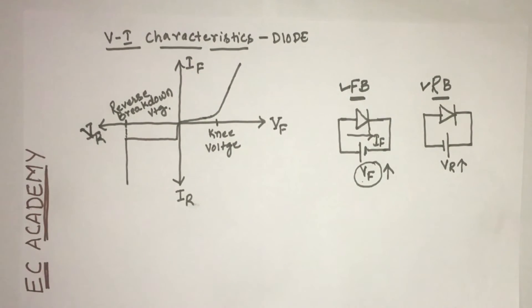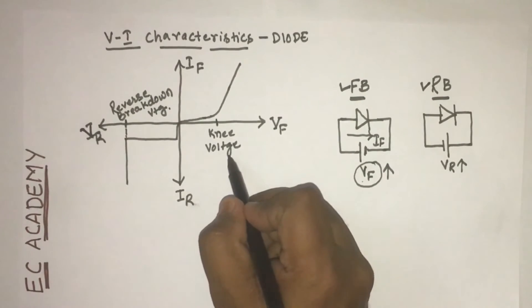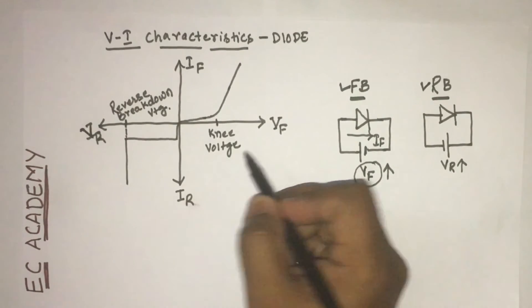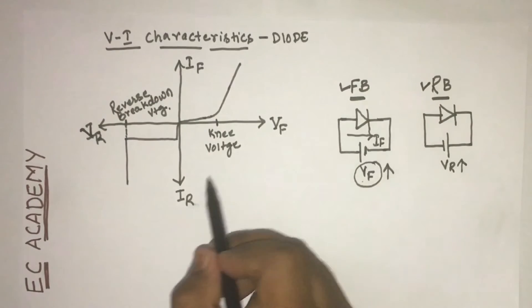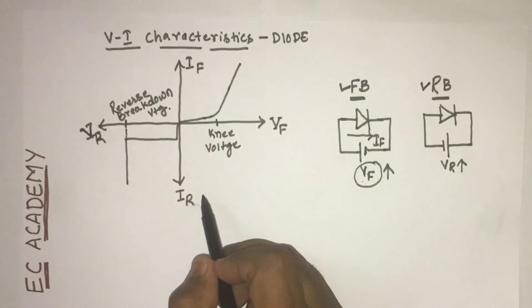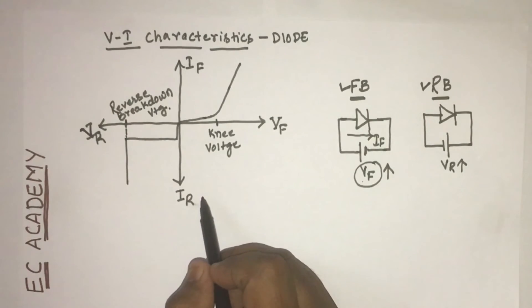We need to understand what is knee voltage and reverse breakdown voltage. Knee voltage is the minimum voltage required by the diode for its conduction when the diode is connected in forward bias condition.